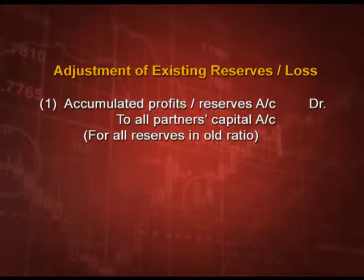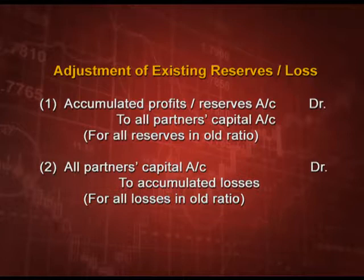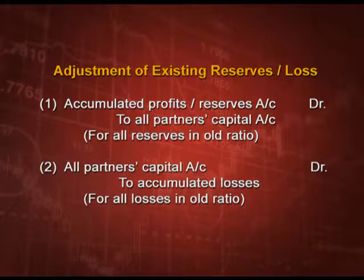Coming to the next topic: how to adjust the existing reserves. Existing reserves must be distributed among the old partners in their old ratio. The entry is: accumulated profits or reserves account debit to all partners capital account in the old ratio. And if there are accumulated losses, it is the reverse entry — all partners capital account debit to accumulated losses.